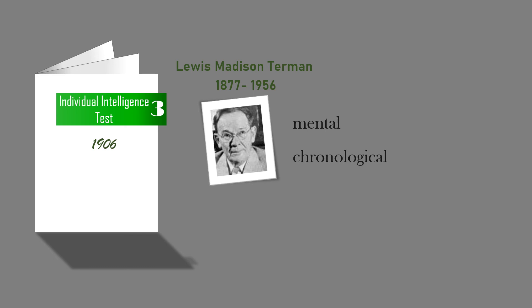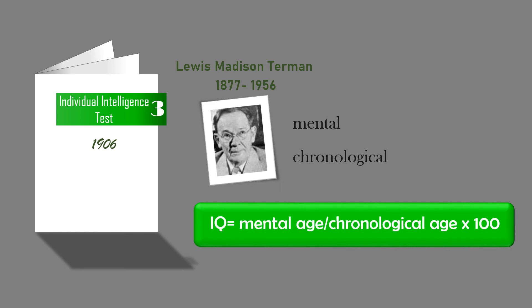The resulting intelligence quotient became known as the IQ. The classic formula for the IQ is: IQ equals mental age divided by chronological age times 100. By far, Thurman's Stanford-Binet Individual Intelligence Test is considered the best available individual test of intelligence.